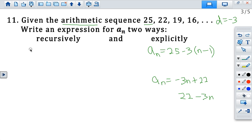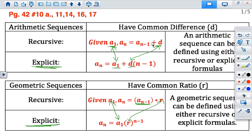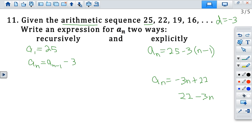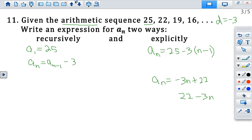All right, the recursive formula. So again, we have to say what a sub 1 is. We have to say what a sub n equals the previous term, a sub n minus 1, and then minus the common difference of 3. Pretty easy. So usually it's a plus the common difference, but because we have a negative common difference, we're doing a minus 3.